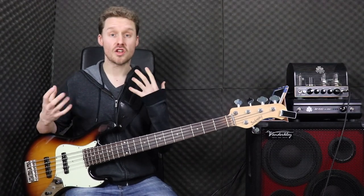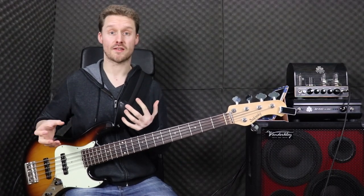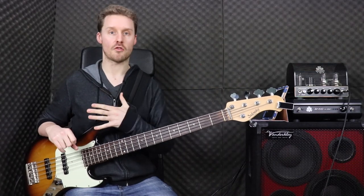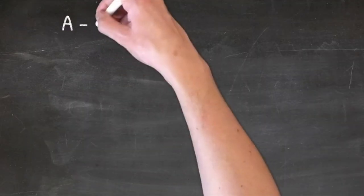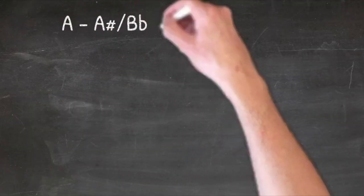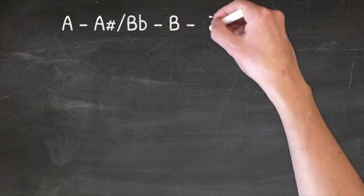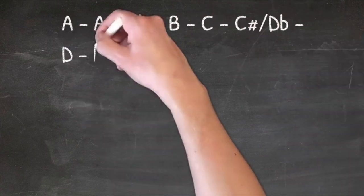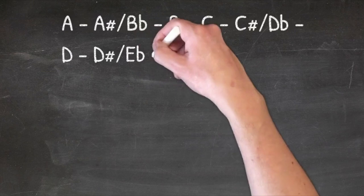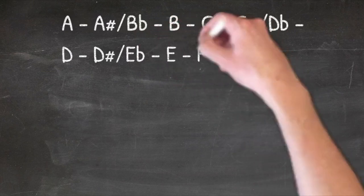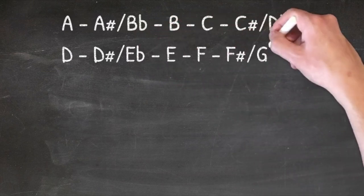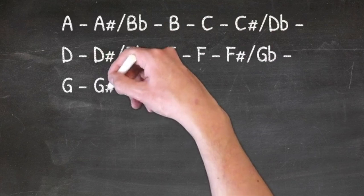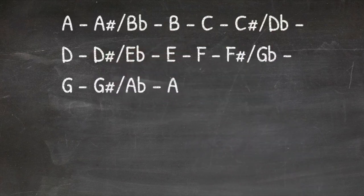The next thing we need to understand are the notes within the chromatic scale. If we start at the beginning of our musical alphabet, which would be A, we would have A, then A sharp or B flat, B, C, C sharp or D flat, D, D sharp or E flat, E, F, F sharp or G flat, G, G sharp or A flat, and then we're back at A.